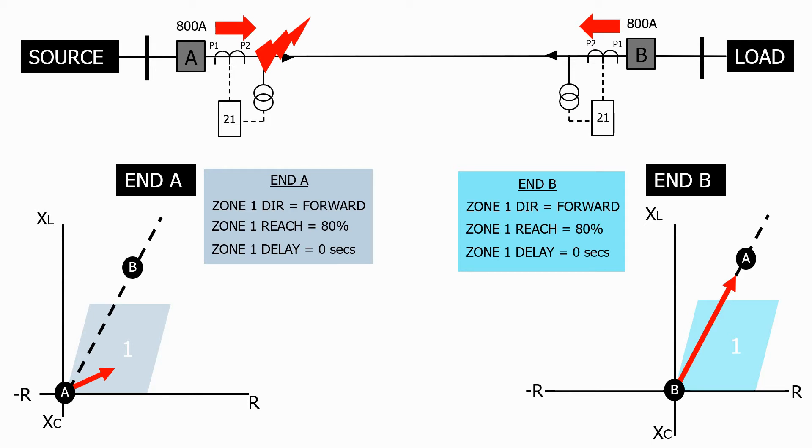But at end B zone 1 only reaches 80% of the line length. The end A impedance relay will now operate, tripping its circuit breaker.